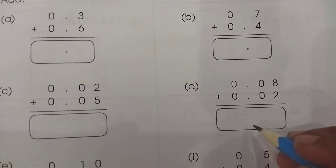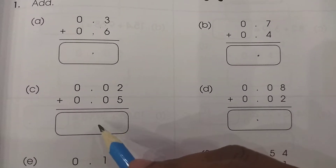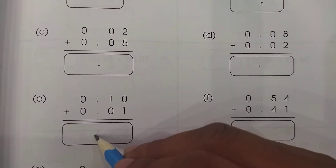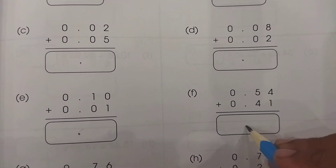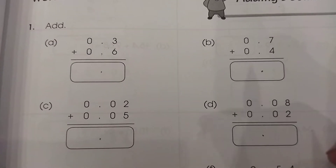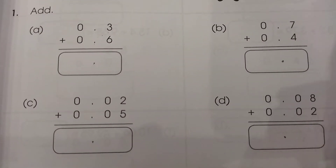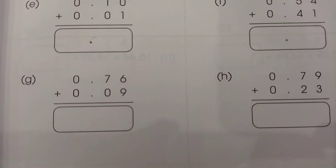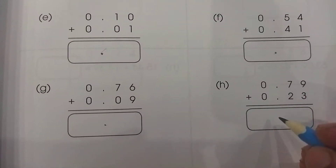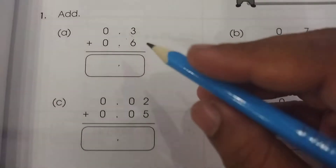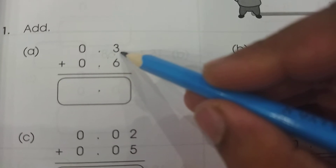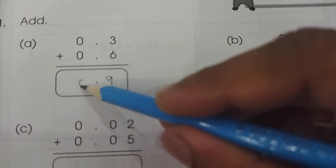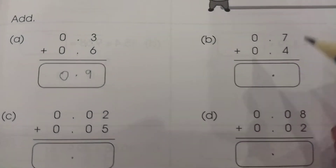Your answer will always be right if you arrange all decimals in one line. Now let's see — here I have 3 and 6. When we add 3 with 6 we get 9, so the answer would be 0.9. Simple.